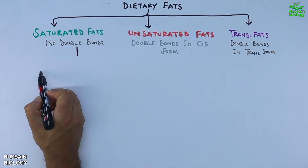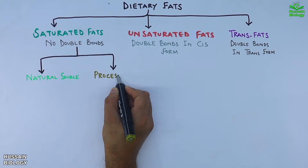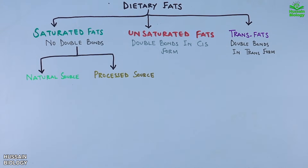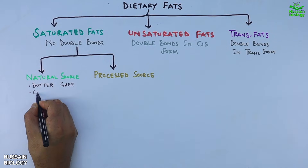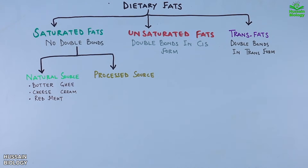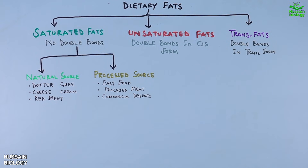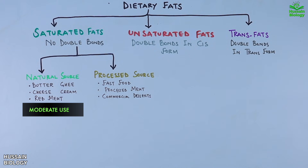Let's start with saturated fats — these fats have no double bonds in their structure. When it comes to sources, we can divide them into two groups: natural sources, like butter, ghee, cheese, cream, and red meat; and processed sources, which include fast food, processed meats, and commercial desserts. This distinction is very important because while natural sources can be taken in moderation, processed sources are more harmful for your health.